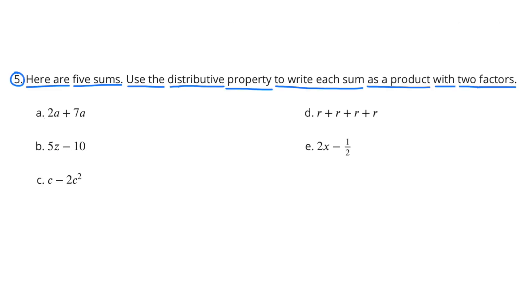Number 5. Here are 5 sums. Use the distributive property to write each sum as a product with two factors. A. 2A plus 7A — the common factor is A. I'll pull the A out on the outside of the parentheses, so it'll be A times (2 plus 7).